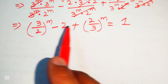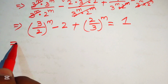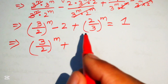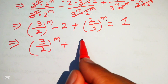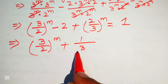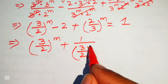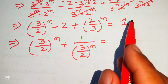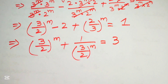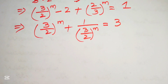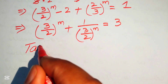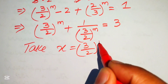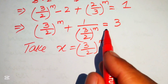Moving -2 to the right-hand side, and noting that (2/3)^m = 1/(3/2)^m, we get (3/2)^m + 1/(3/2)^m = 1 + 2 = 3.